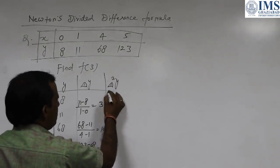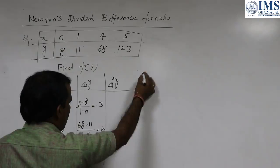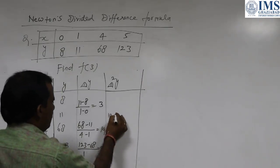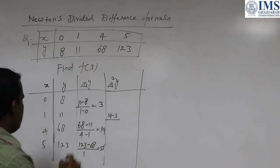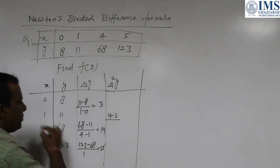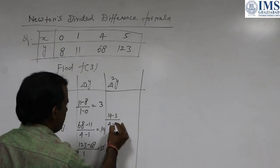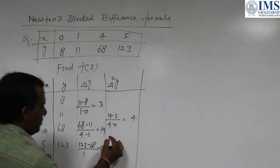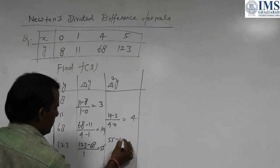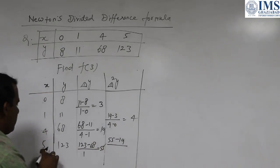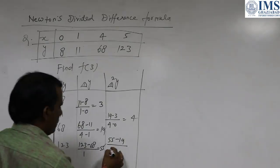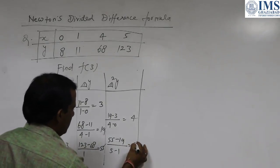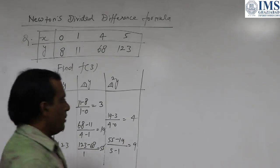The second divided differences: (19 minus 3) divided by (4 minus 0) equals 16 divided by 4, which is 4. And (55 minus 19) divided by (5 minus 1) equals 36 divided by 4, which is 9.